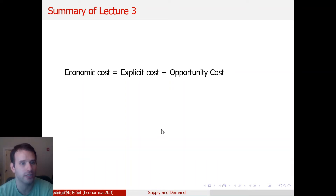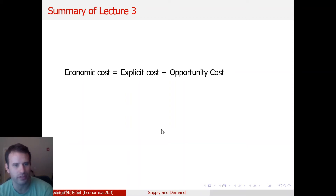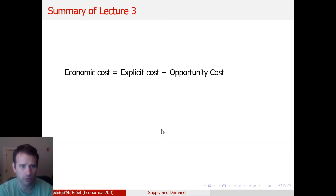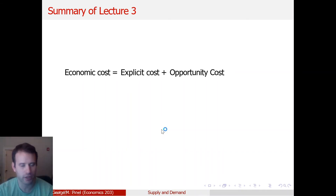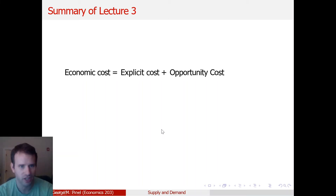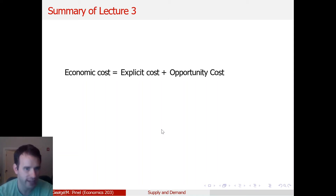Same thing with economic profit — it takes into account opportunity costs. If something is economically profitable, your accounting profit minus your economic cost is greater than or equal to zero. Whereas if something is profitable in the accounting sense, all you're saying is that profit is greater than the explicit cost. So economic profit will also subtract out opportunity cost.